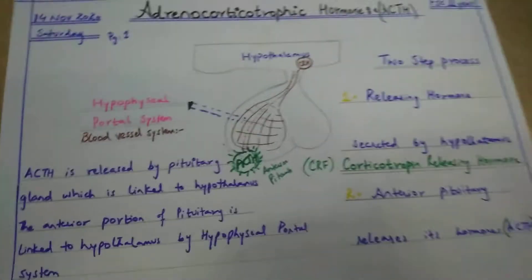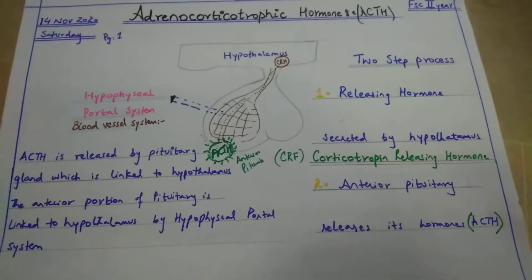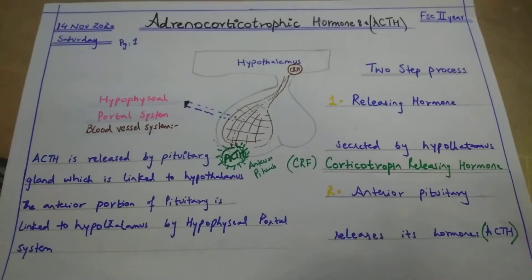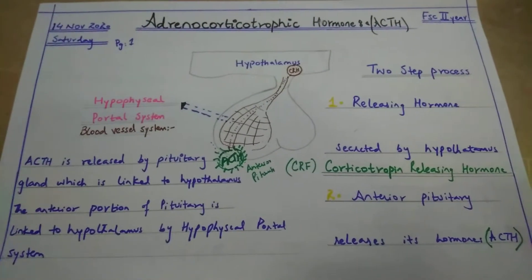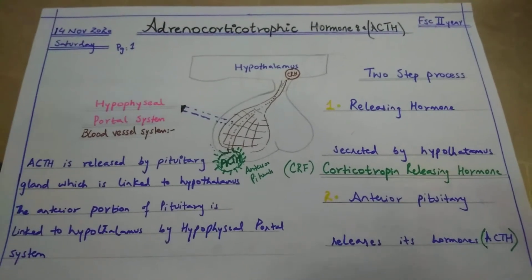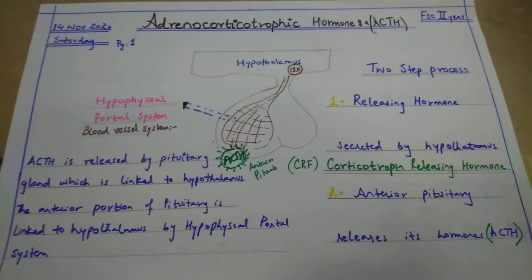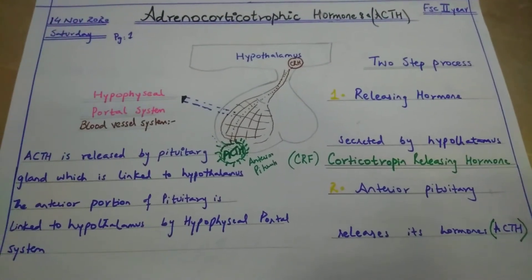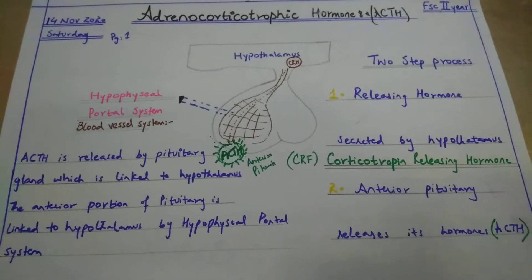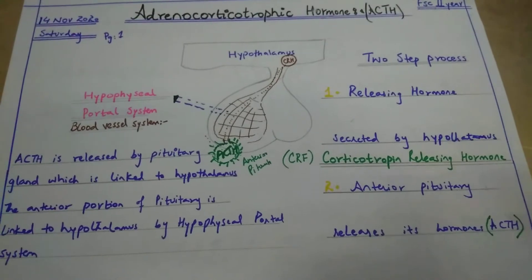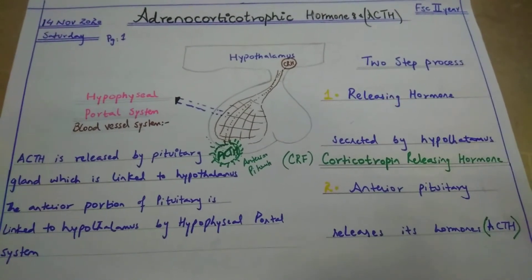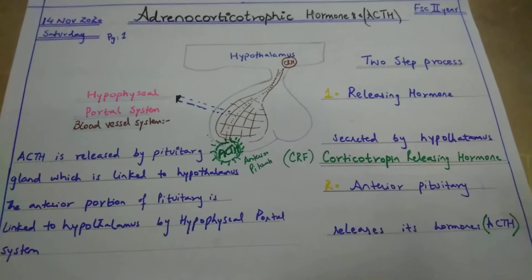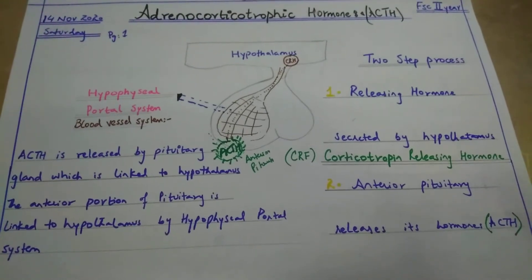The pituitary gland is just the size of a pea — like chick peas or kidney beans — only 0.5 grams. But look at how many hormones this gland releases and how it controls different body activities like muscular contraction, height growth, and protein synthesis.